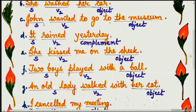Example C: John wanted to go to the museum. 'John' is the subject, 'wanted' is V2, and 'the museum' is the object.